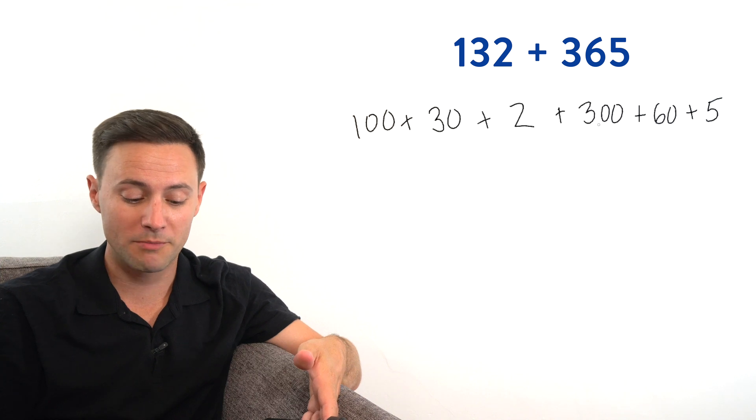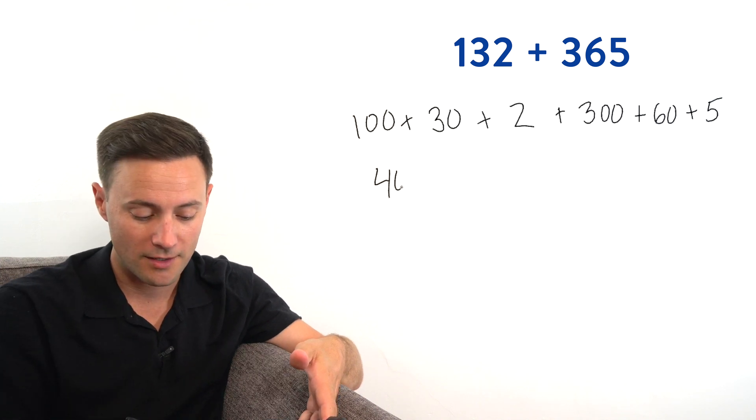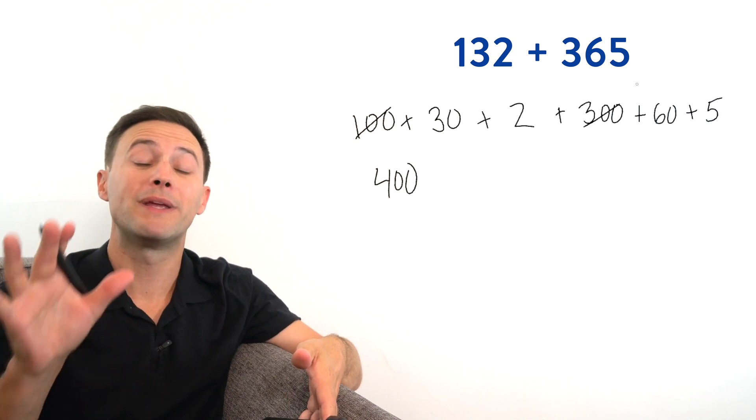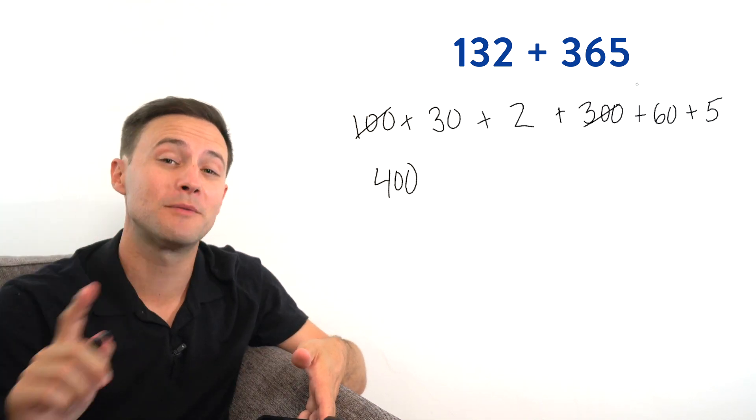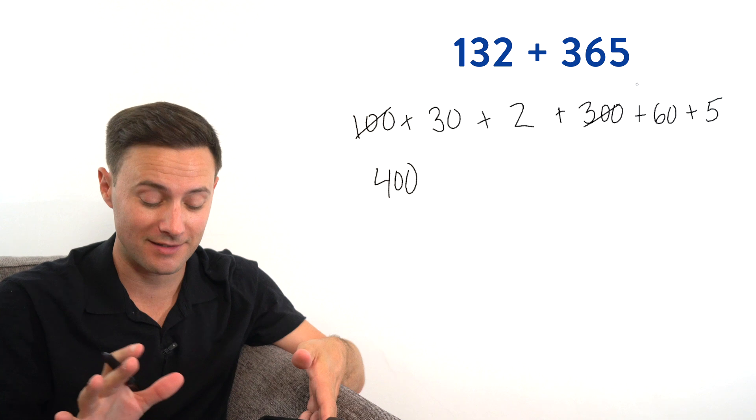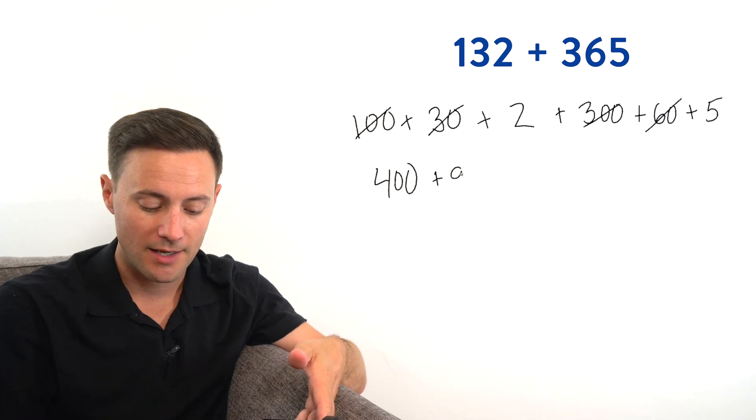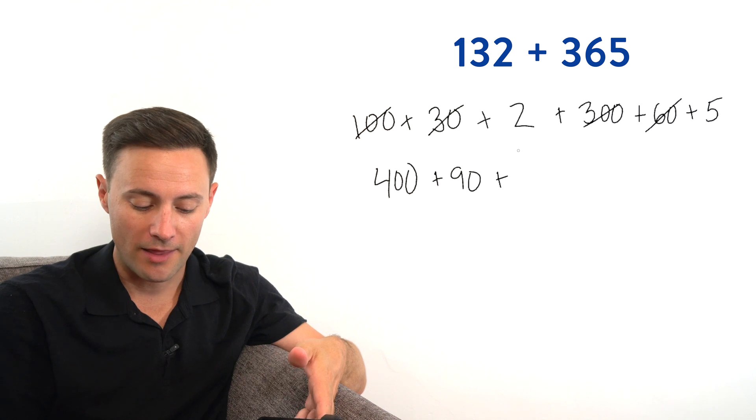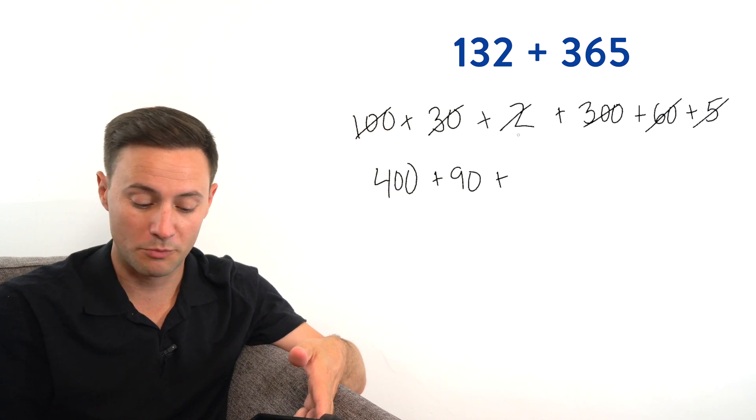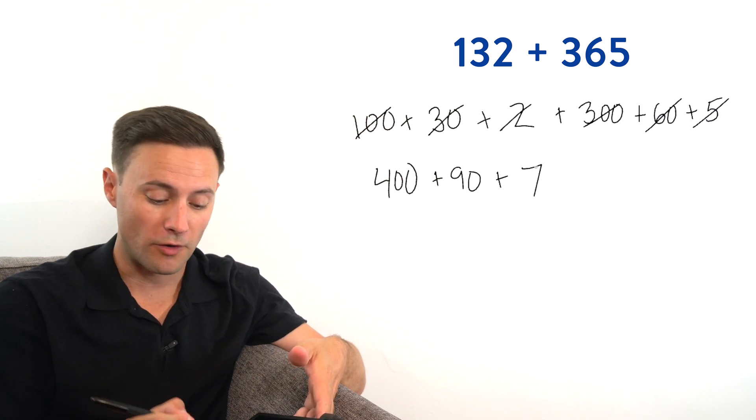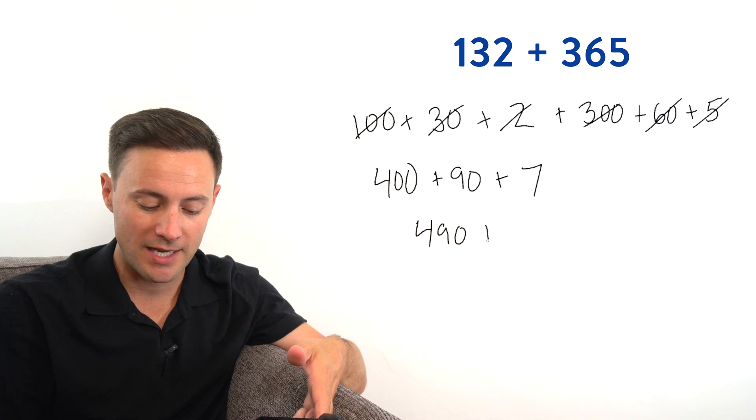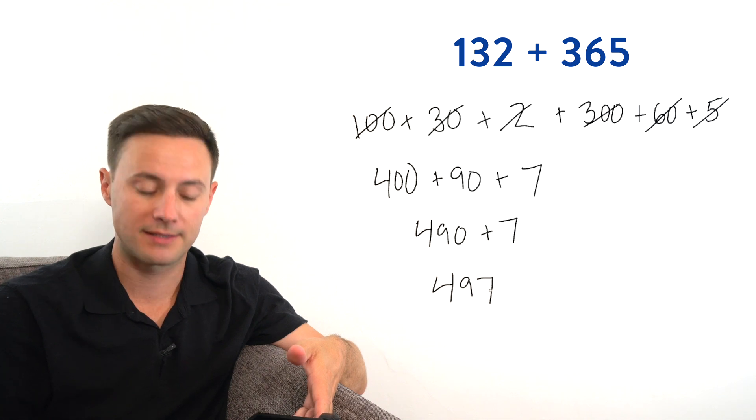Well, 100 plus 300, that gives us 400. Cross those out. And remember, because we're adding, the order doesn't matter. So we can do this. The 30 plus the 60, 30 plus 60 is 90. And then two plus five, two plus five is seven. So 400 plus 90 is 490 plus seven is 497.